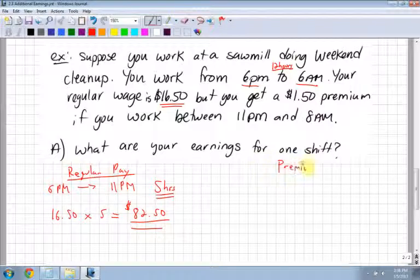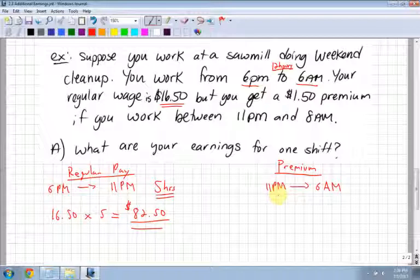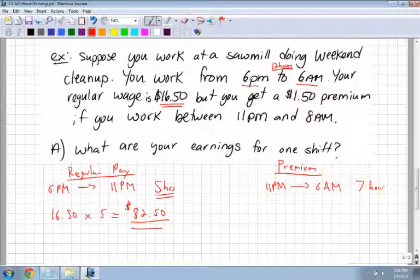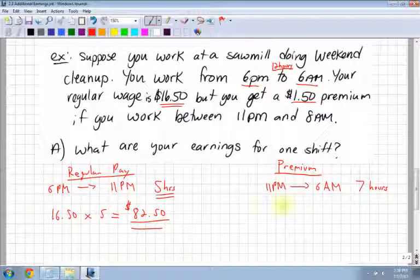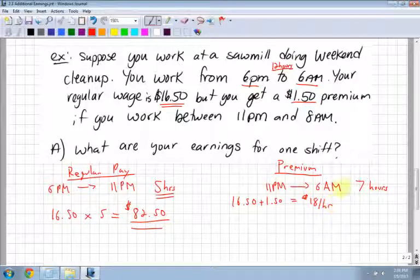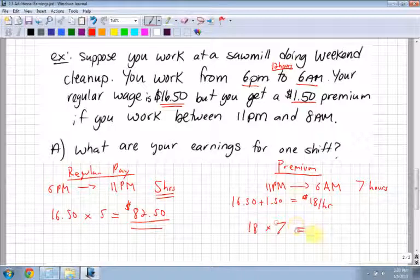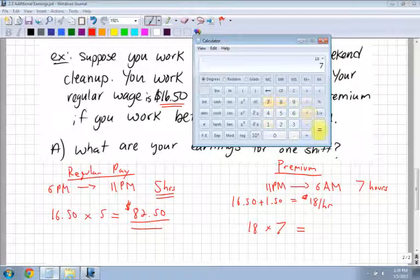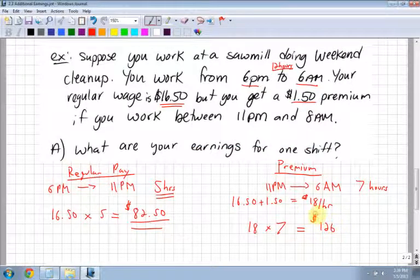Now let's look at your premium. The premium pay goes from 11 p.m. all the way until 6 a.m.—that's 11, 12, 1, 2, 3, 4, 5, 6—7 hours. You're making 7 hours of premium pay. You get $1.50 extra for premium pay, which means you're getting $16.50 plus $1.50 for every hour, which is $18 per hour. You're working 7 hours, so $18 per hour for 7 hours—multiply them: 18 times 7 is $126.